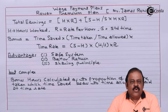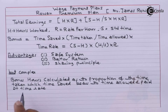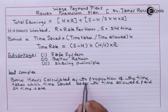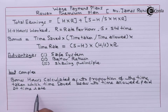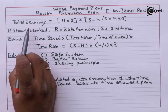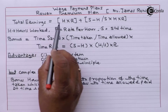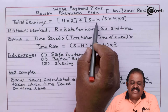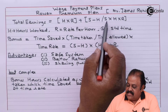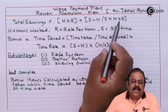Bonus hours are calculated as a proportion of the time taken which time saved bears to time allowed, and paid at time rate. Under this method, total earnings are calculated as H multiplied by R, plus S minus H divided by S, multiplied by H multiplied by R.